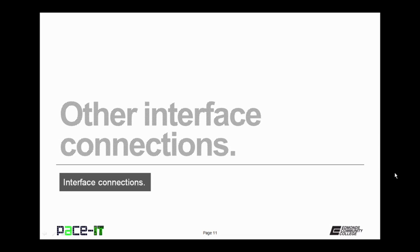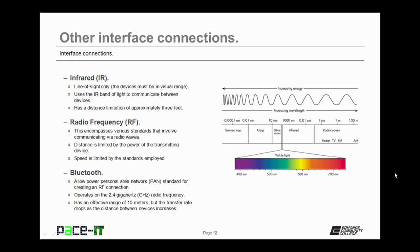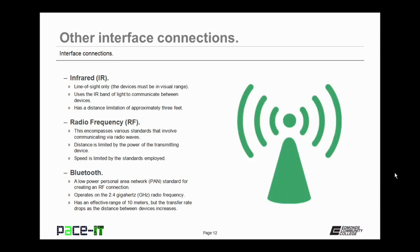Now let's move on to other interface connections — these are non-wired interfaces. We'll begin with infrared, which is a line-of-sight interface only — devices must be in visual range of each other. It uses the infrared band of light to communicate, has a distance limitation of approximately 3 feet, and by today's standards was fairly slow. It's not very common anymore. Then we have radio frequency, or RF, which encompasses various standards that communicate via radio waves. Distance is limited by the power of the transmitting device, and speed is limited by the standards employed.